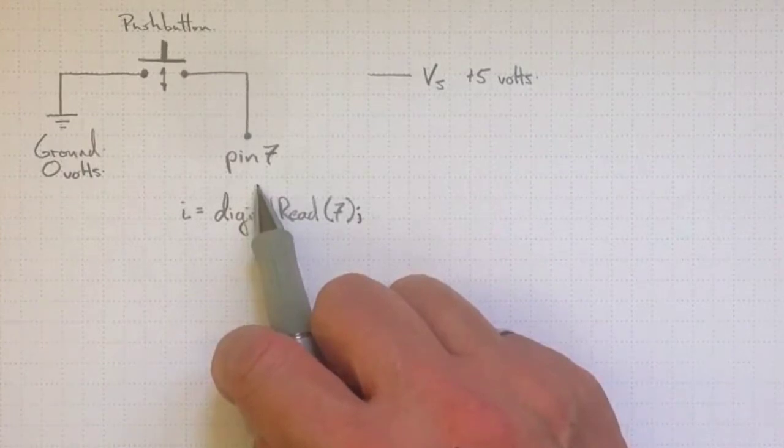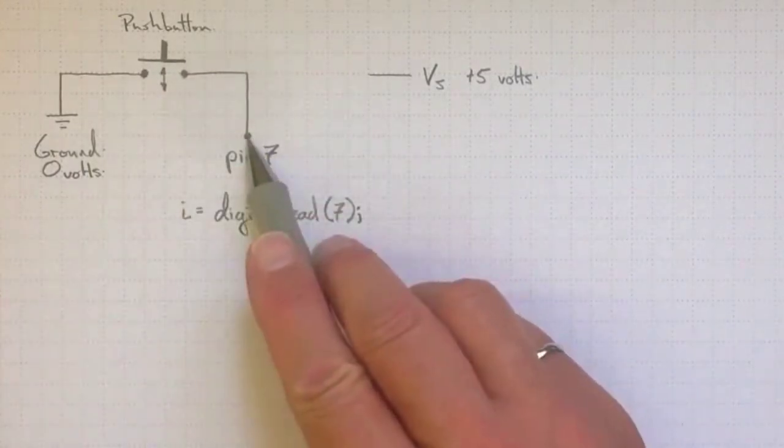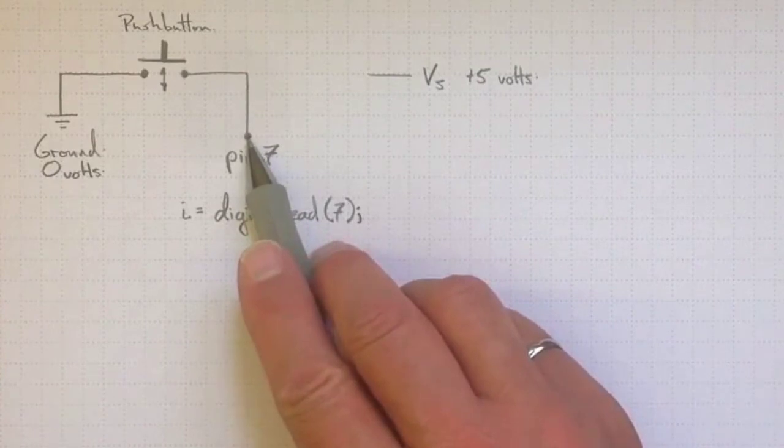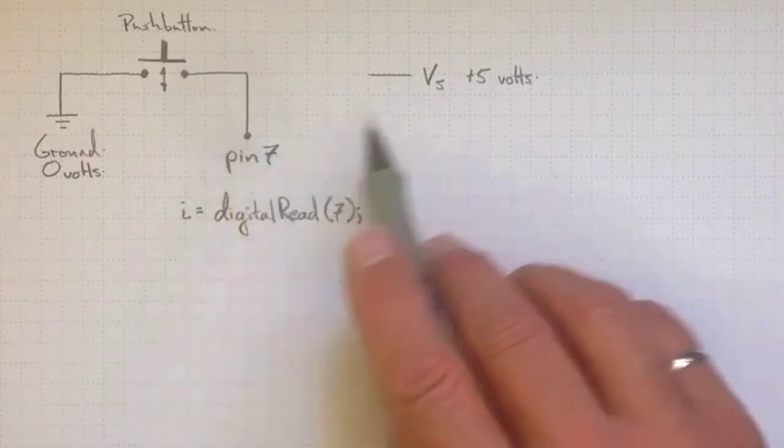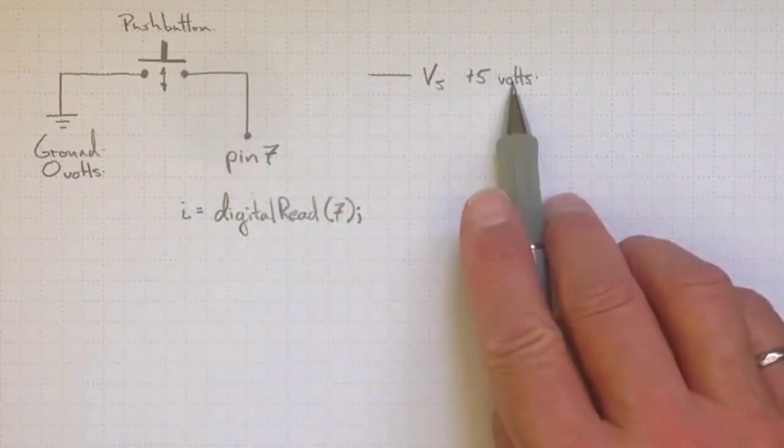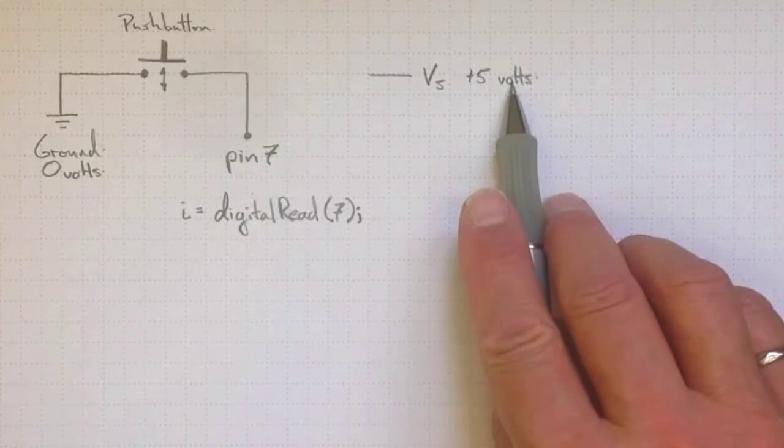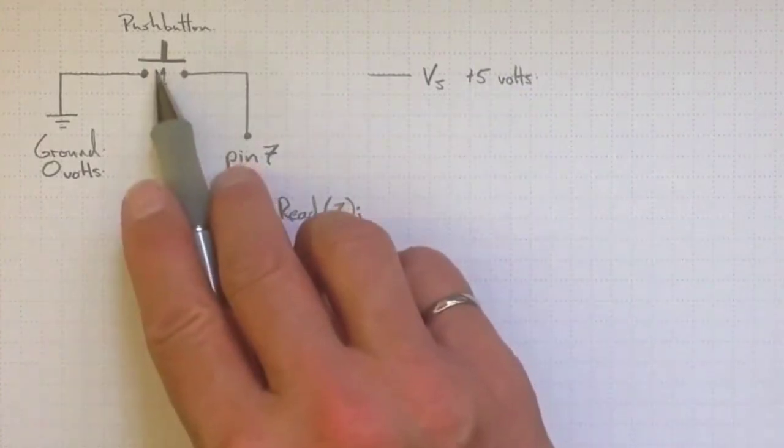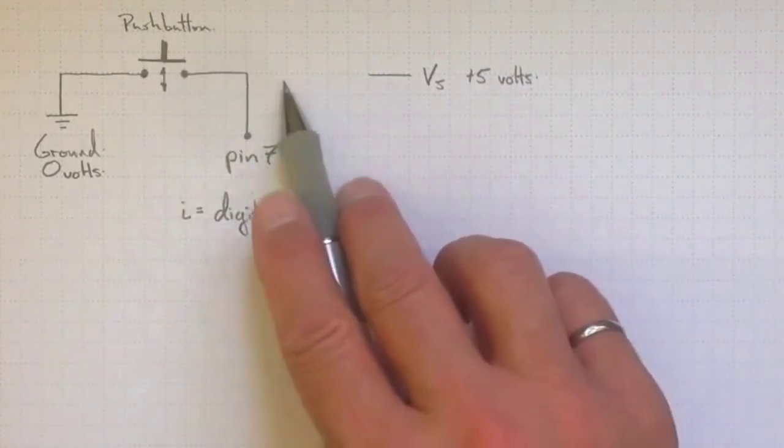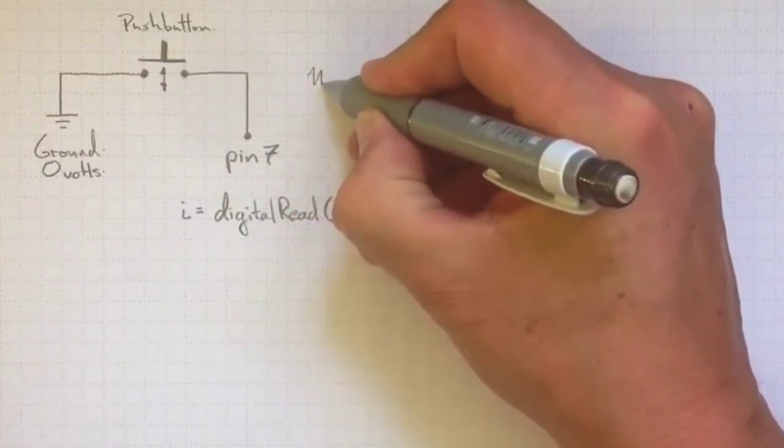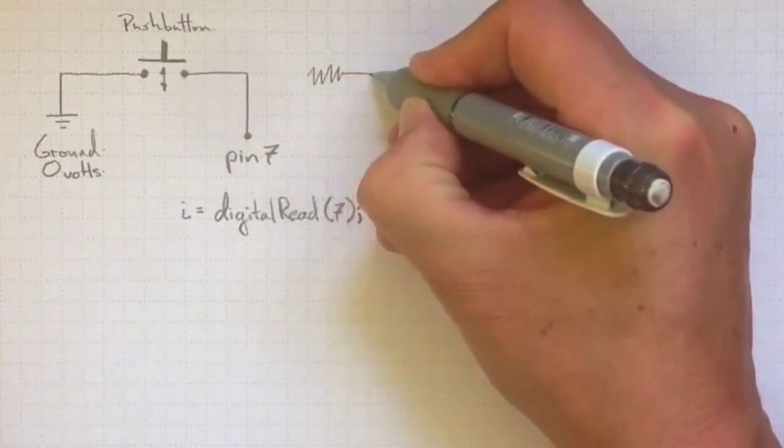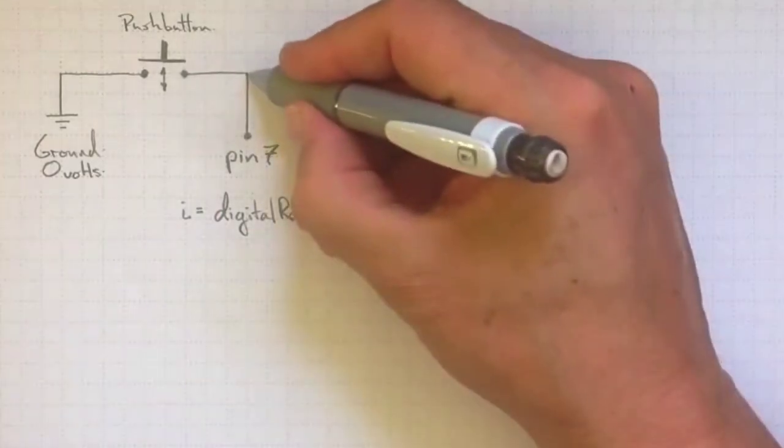And that would work okay, except that when I wasn't pushing the button, I don't know what voltage I'll have on pin number 7. I'd like it to be 5 volts when I'm not pushing the button, so I need to somehow connect it to the 5 volt source here. And it has to go to 0 volts when I push the button, so there has to be a resistance in between. This is called a pull-up resistor between the 5 volts and pin 7.